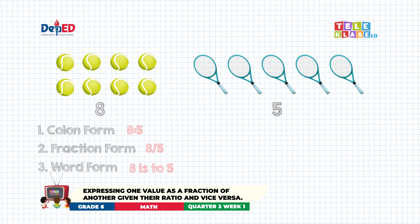In the first example, we encountered the phrase 'vice versa,' which means we will write the ratio the other way around. For colon form, eight is to five will become five is to eight, since we counted the rockets first over the balls. For fraction form, eight is to five will become five is to eight. Is that clear? Great!